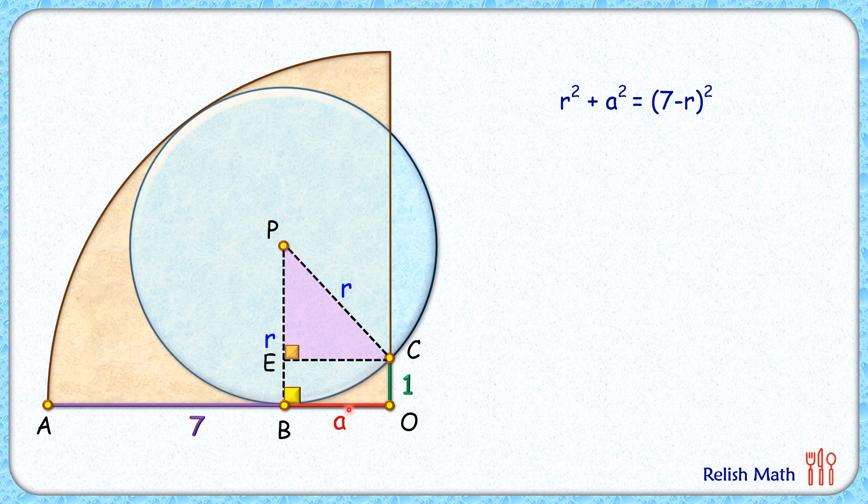Now here in this triangle PEC, EC length will be same as a centimeters, EB length will be same as 1 centimeter, and thus PE length will be r minus 1. In triangle PEC, applying Pythagoras theorem, we'll get (r-1)² + a² = r². Subtracting these two equations, when we are subtracting, a² will get cancelled down.